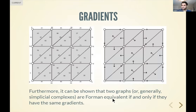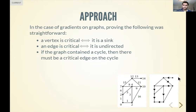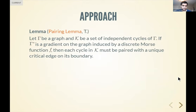In the case of gradients on graphs, some things are immediately straightforward: a vertex is critical if and only if it's a sink of the gradient; an edge is critical if and only if it is undirected under the gradient; and if the graph contains a cycle, there must be a critical edge on that cycle — otherwise going around the cycle would produce a contradiction in the assigned values. For an arbitrary directed graph to be the gradient of something, there are just two simple conditions: no directed cycles, and no two edges share a tail.